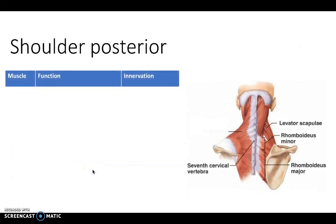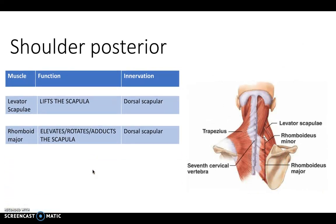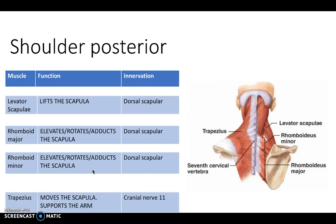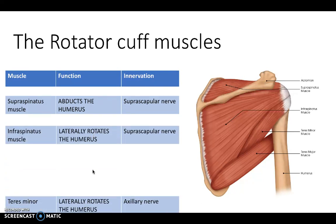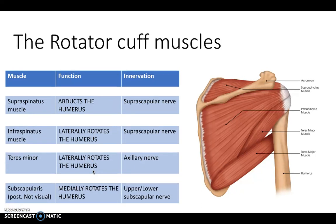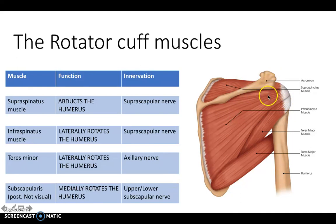For the posterior shoulder there are several more muscles to learn: levator scapulae, which lifts the scapula, rhomboid major and minor, and trapezius. The rotator cuff muscles are a commonly discussed group including supraspinatus, infraspinatus, teres minor, and subscapularis posteriorly - not visible in this picture. These muscles create stability for the shoulder joint, which is actually the least stable joint of the body and the most likely to become dislocated. They also laterally rotate the humerus, while subscapularis medially rotates the humerus.